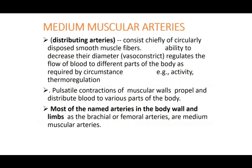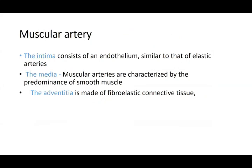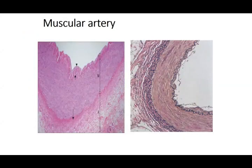Medium-sized arteries are muscular or distributing arteries. They have circularly arranged smooth muscle fibers, and you can clearly identify the internal elastic lamina differentiating it from the media. Most named arteries in the body are medium-sized arteries. In the slide you can see the endothelium, then the muscular layer with the prominent internal elastic lamina as a clear border outside the endothelium, then the adventitia. The muscle is smooth muscle, not skeletal muscle.